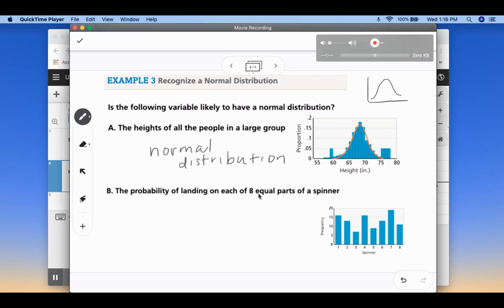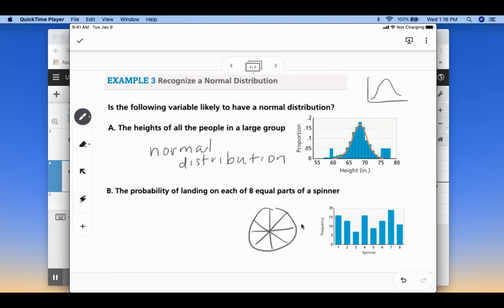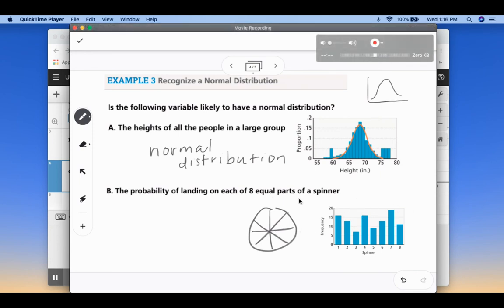The probability of landing on each of eight equal parts of a spinner. So if you think of a spinner that is divided into eight equal parts, the more you spin to get a larger sample size, you're going to notice it's going to start to level off even more. So this is not symmetric. This is not skewed. So this would not be a normal distribution. Because as the more examples that we put in there, it's going to level off.